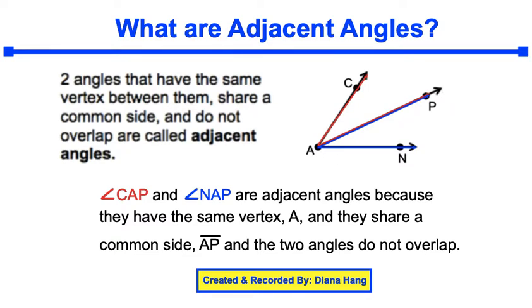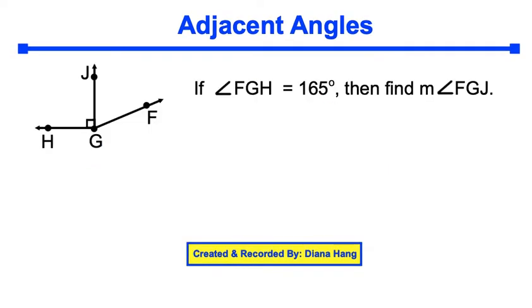Let's take a look at an example. In this picture we have angle HGJ, and that is a 90 degree angle because of this indicator right here. I have another angle JGF.